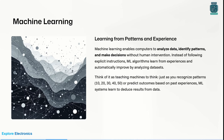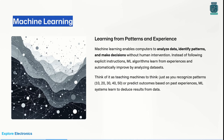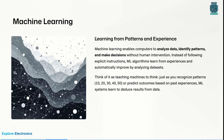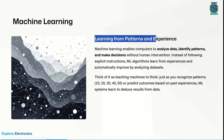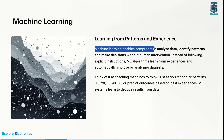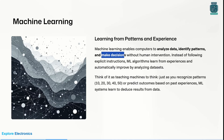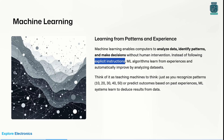Machine learning is always tagged with artificial intelligence, so let's understand what exactly it is. Machine learning means the machine will learn from patterns and experiences. The definition: machine learning enables computers to analyze data — that is the first point; identify patterns — that is the second point; and make decisions — that is the third point. Without human intervention or explicit instruction, the machine understands data, identifies patterns, and makes decisions. ML algorithms learn from experiences and automatically improve by analyzing data sets.